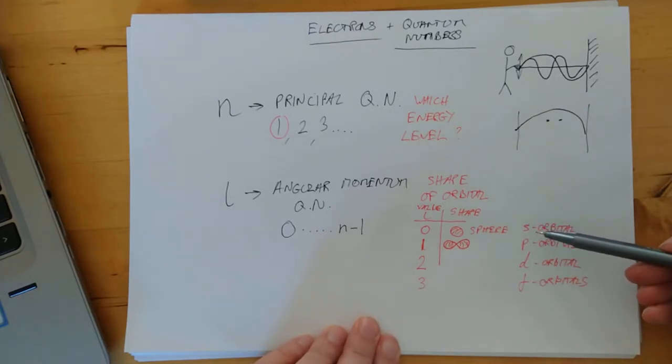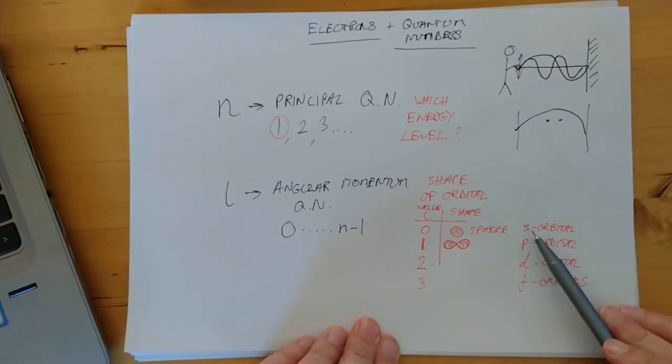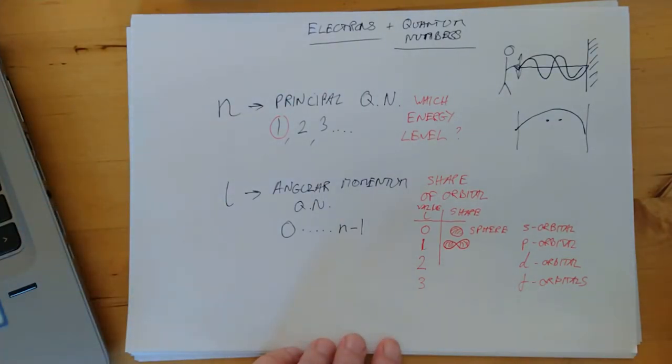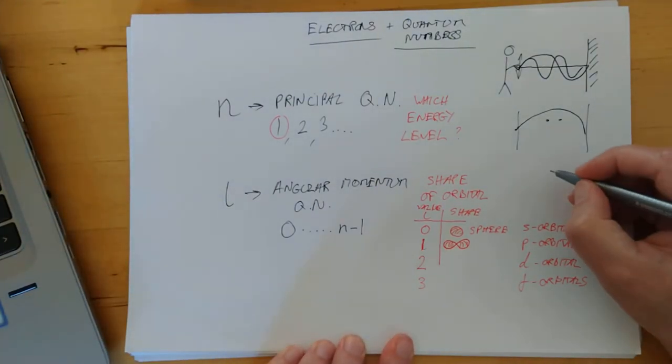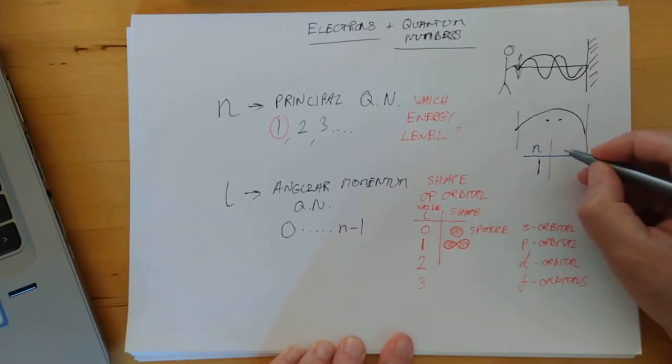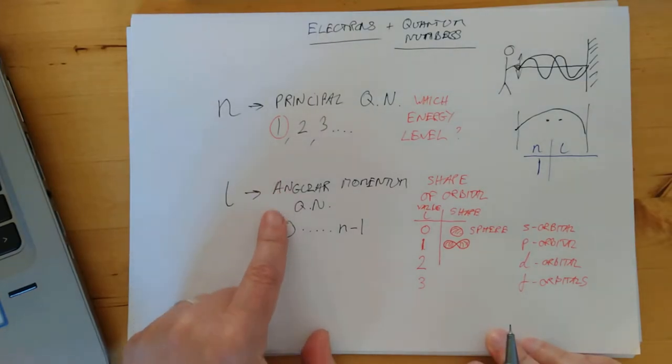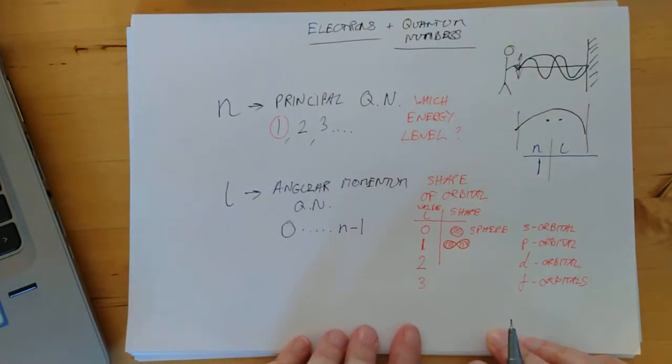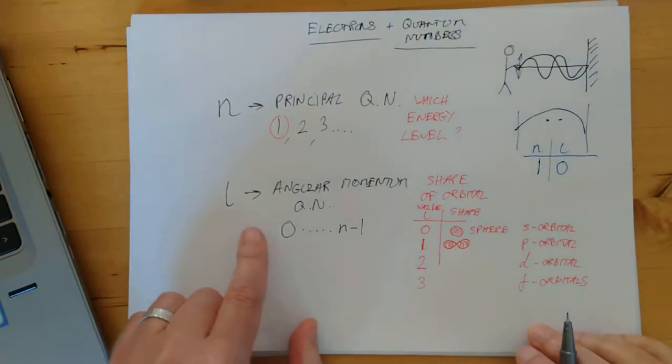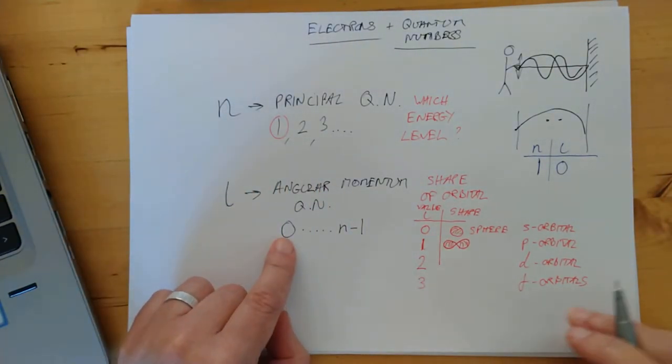In case you're wondering why they picked these random letters, these were letters used back in the bad old days of spectroscopy to describe lines: Sharp, diffuse, fine. Now, I said in blue that I'll try and give you an example here. N, let's pick a particular electron. This electron is in the first energy level. So that means N can only be one. L, it says that L can be from 0 up to N-1. Well, there's only going to be one value of L, and it's going to be 0.